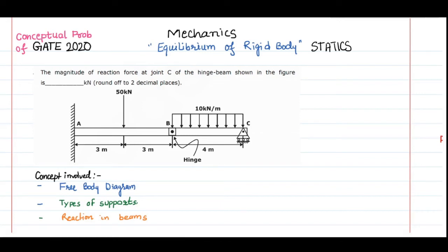Let's solve a conceptual problem from the 2020 GATE exam, taken from engineering mechanics on equilibrium of rigid bodies. We have to find the reaction force at point C. What makes this problem different is that joint B is a hinged joint — normally we have a single beam, but here the pin joint makes the problem a bit tricky.